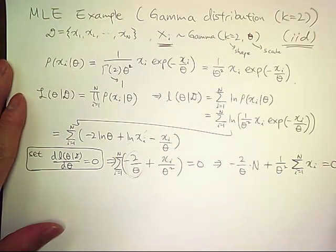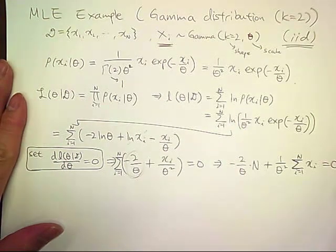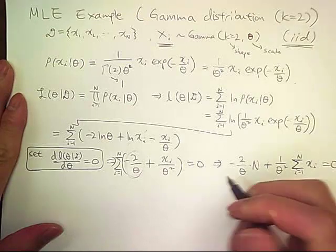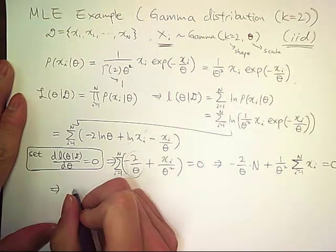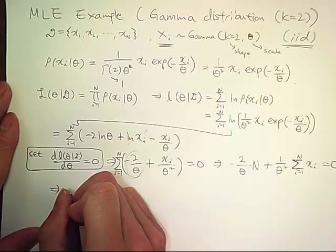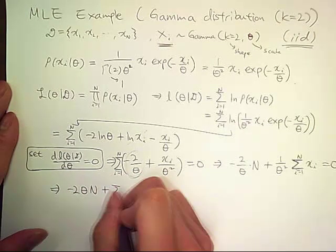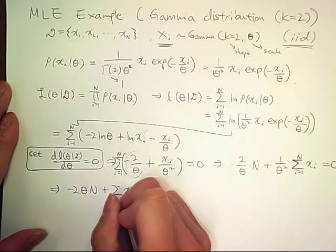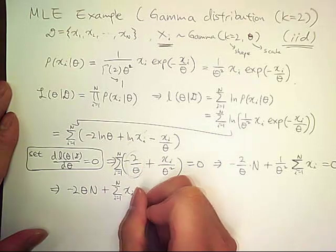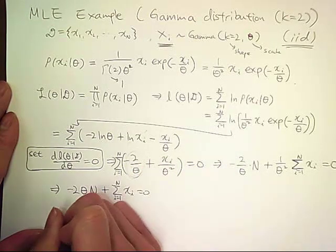So now we can multiply theta squared on both sides. And it becomes negative 2 theta n plus sum of x sub i equals 0. Finally,